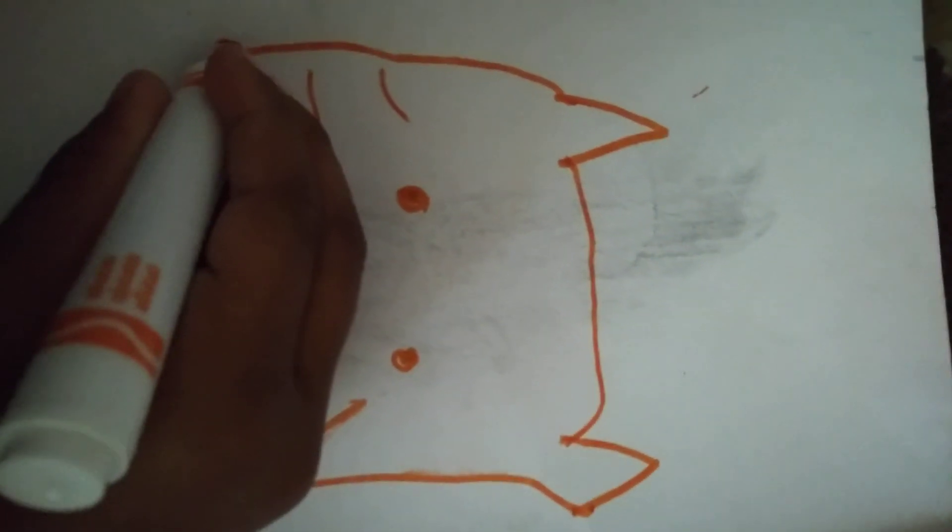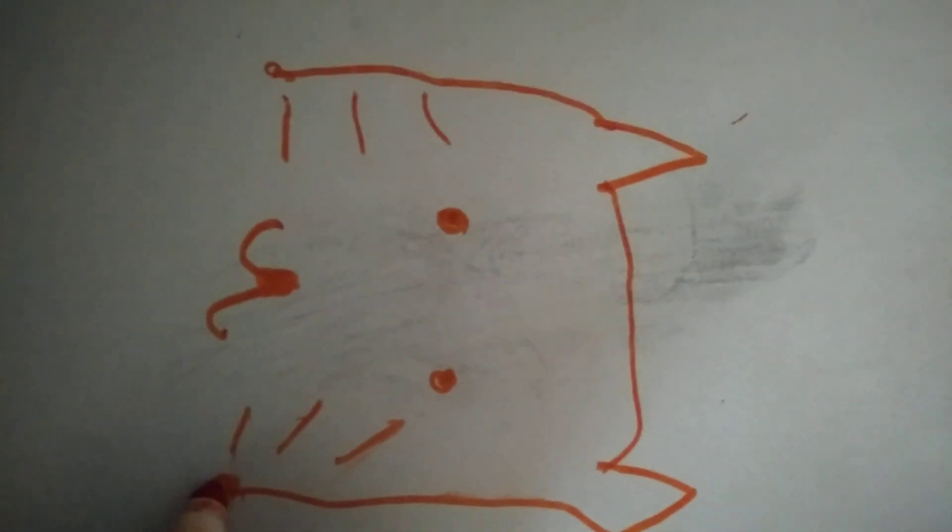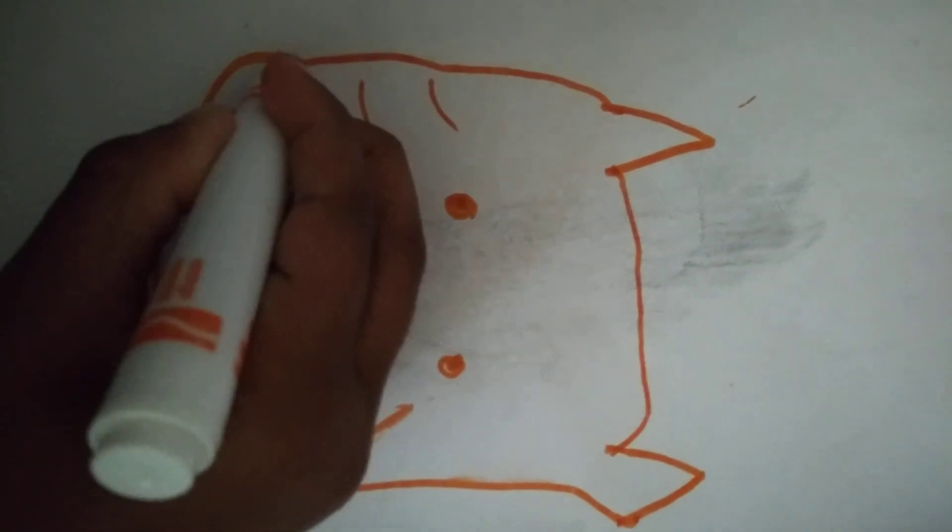After that we are going to color in the circles. After that we are going to start a line from the circles and go around.